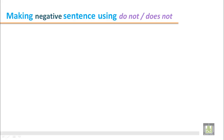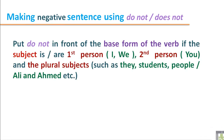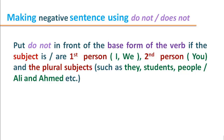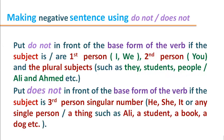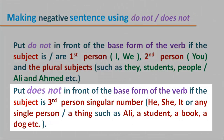Making negative sentences using 'do not' or 'does not'. Here is a rule: use 'do not' in front of the base form of the verb if the subject is first person (I, we), second person (you), or plural subjects such as they, students, people, Ahmed and Ali, etc. There is another rule for using 'does not' in front of the base form of the verb: if the subject is third person singular — just like he, she, it, or any single person or thing, for example Ali, a student, a book, a dog, etc.